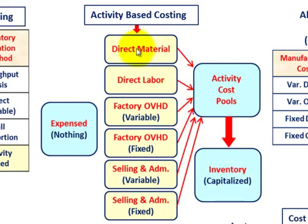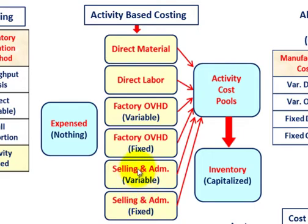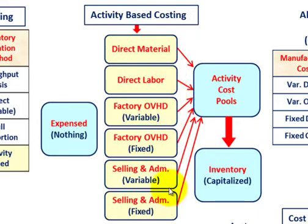With activity-based costing, we're taking our direct materials, our direct labor — including any indirect materials and indirect labor — and also our factory overhead, both variable and fixed. We also include selling and administrative costs, both variable and fixed, along with engineering, research and development, and all other support functions supporting the product. All costs involved in producing our product go into activity cost pools, and then they're drawn out of those pools into our inventory and capitalized.